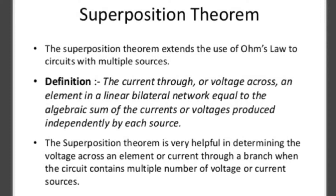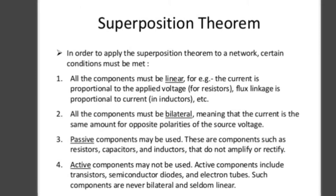Each source is considered one at a time, and the remaining sources will be deactivated. The superposition theorem is very helpful in determining voltage across an element or current through a branch when the circuit contains multiple voltage or current sources. When the network consists of a linear bilateral network with two or more sources, one source will be activated at a time, and the current through any branch equals the algebraic sum of responses from all sources.